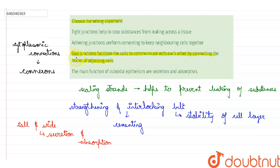So the only correct option for our question is the third one, which states that gap junctions facilitate cells to communicate with each other by connecting the nucleus of the joining cell — this is false. They do not connect the nucleus; they connect the cytoplasm.